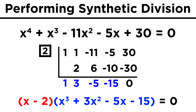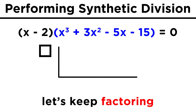We just have to understand that what is left will be of a degree that is one less than the original polynomial, so since we started with a quartic, the result is a cubic. We can simplify this to x minus two times x cubed plus three x squared minus five x minus fifteen. If we wanted, we could continue factoring from there until we have nothing but binomials, and therefore all the possible solutions.